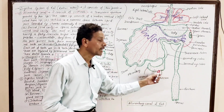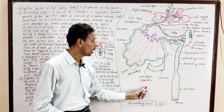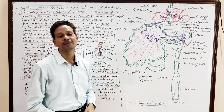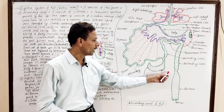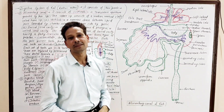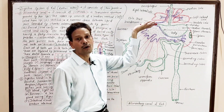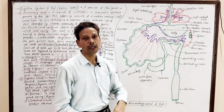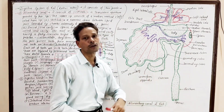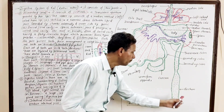The cecum is a small sac-like structure, and its last terminal tubular part is the vermiform appendix. Both the vermiform appendix and cecum are well developed in case of RAT. The colon is divided into three parts: ascending colon, transverse colon, and descending colon. The terminal part of the large intestine is the rectum, which stores fecal matter and opens by the anus.